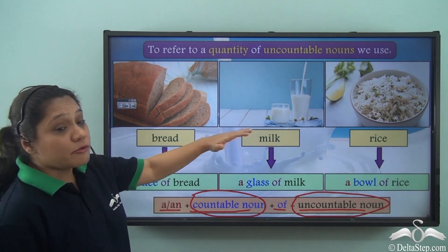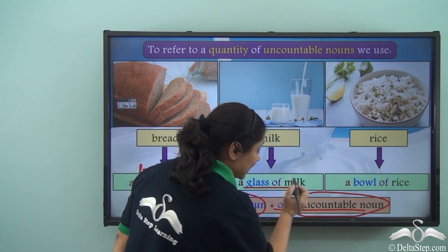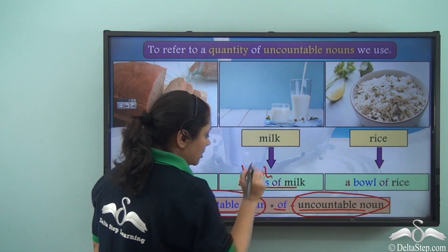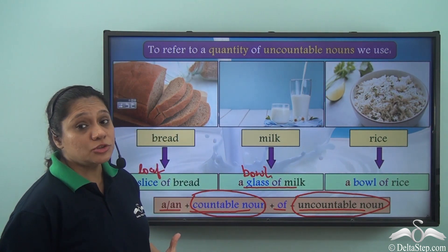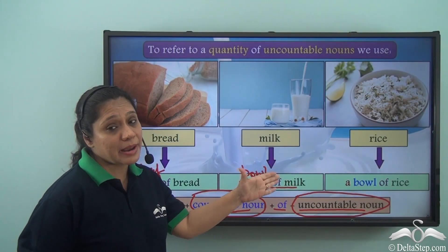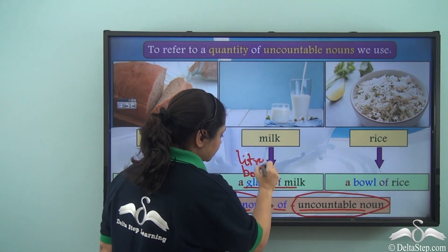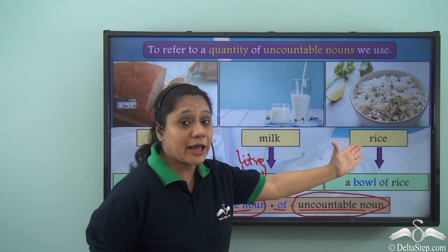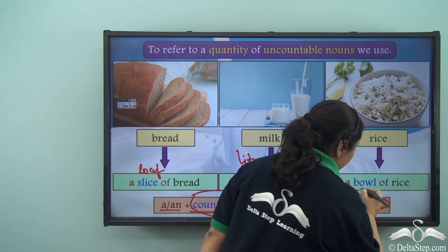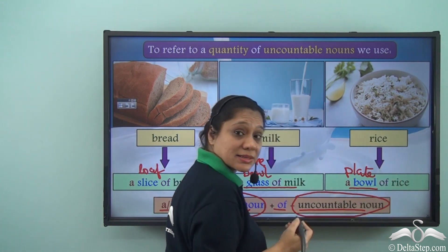Similarly, we do not say one milk or two milk. We say 'a glass of milk' or 'a bowl of milk.' We can also refer to milk with its measurement — 'a litre of milk.' Likewise, we cannot say one rice or two rice. We can say 'a bowl of rice,' 'a plate of rice,' or 'a sack of rice.'